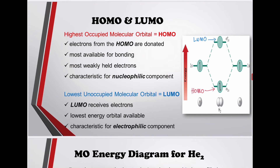HOMO and LUMO: the Highest Occupied Molecular Orbital (HOMO) is where electrons are donated from — these are the most available for bonding and the most weakly held electrons, characteristic of nucleophilic components. The Lowest Unoccupied Molecular Orbital (LUMO) receives electrons, is the lowest energy orbital available, and is characteristic of electrophilic components.